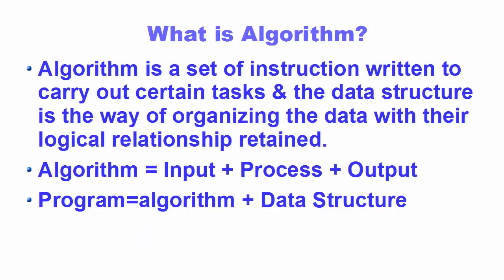An algorithm is a set of instructions written to carry out a certain task, while a data structure is the way of organizing data with its logical relationships retained. An algorithm is created with three important ingredients: first is the input, second is the process, and third is the output. You provide some data as input, process that data, and from that processing you get an output.